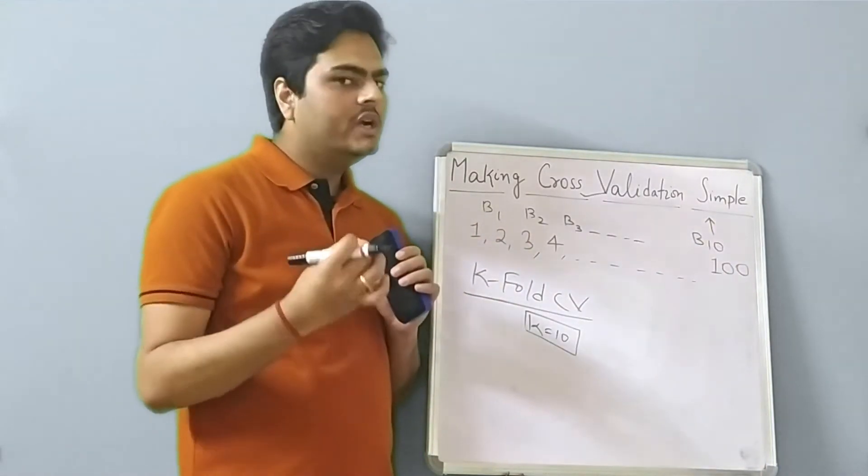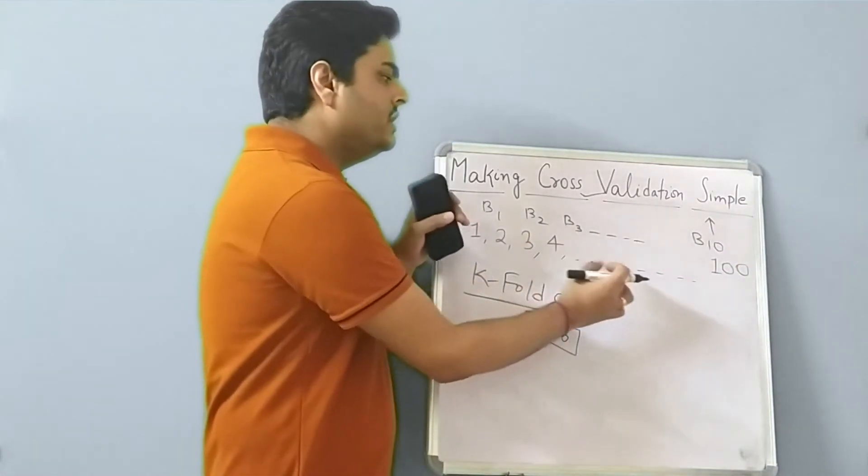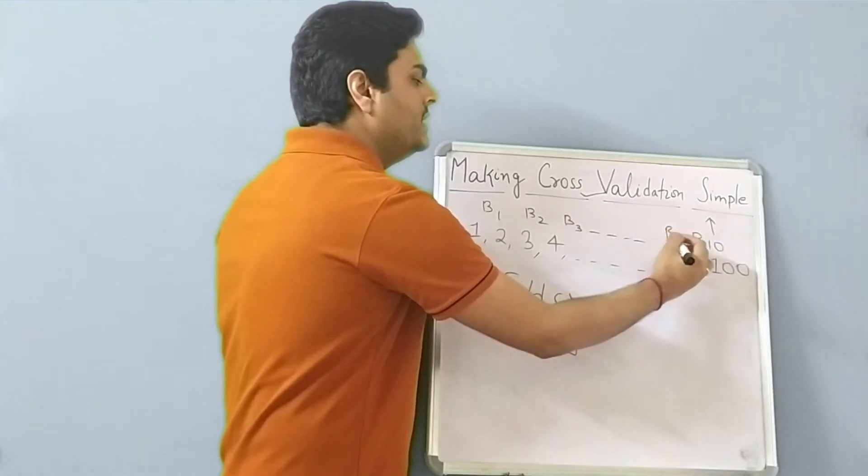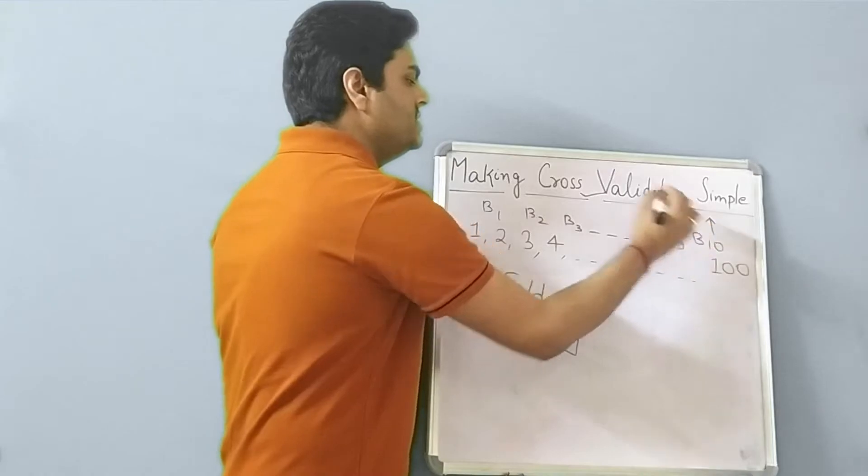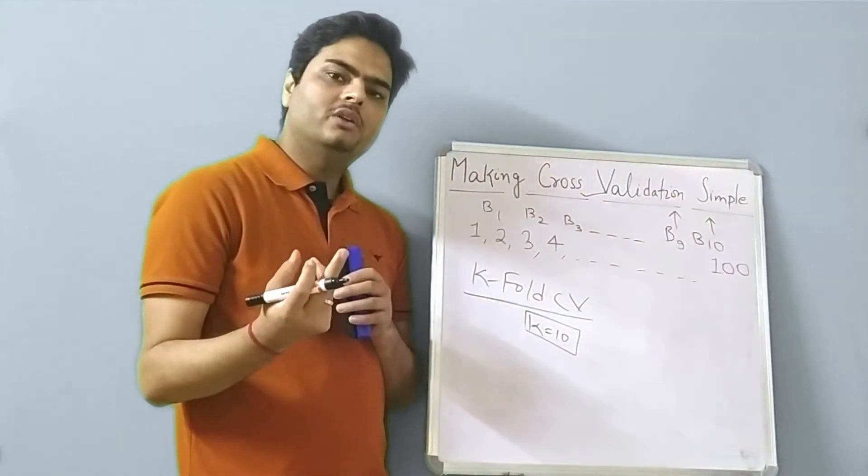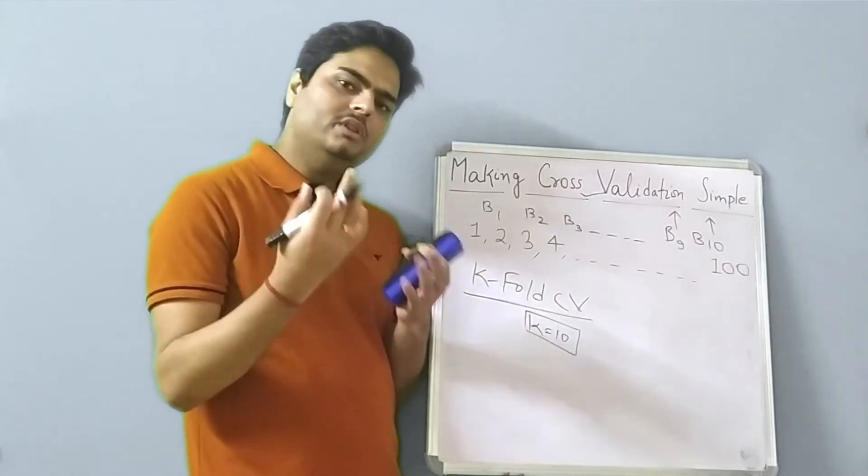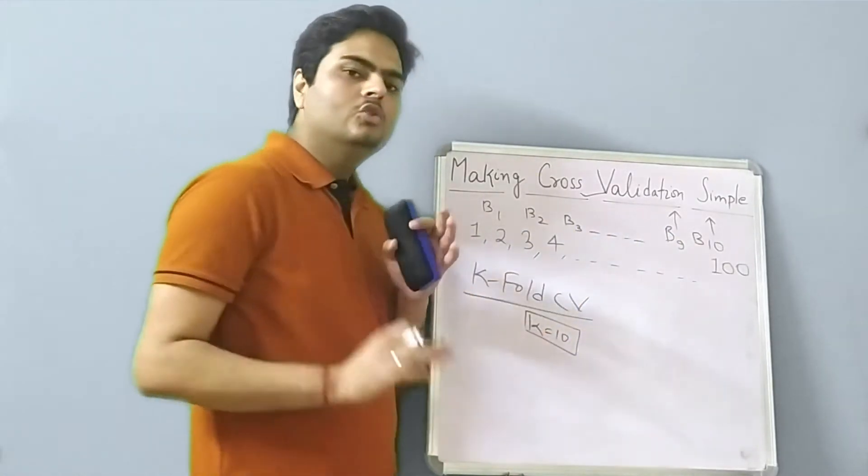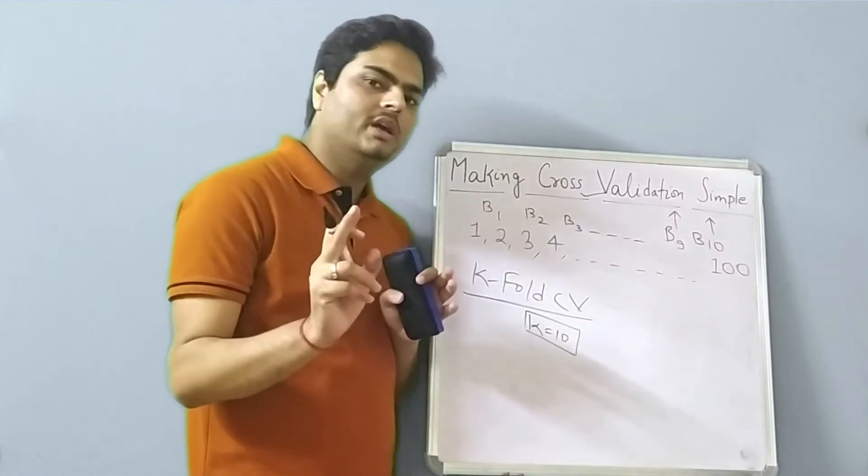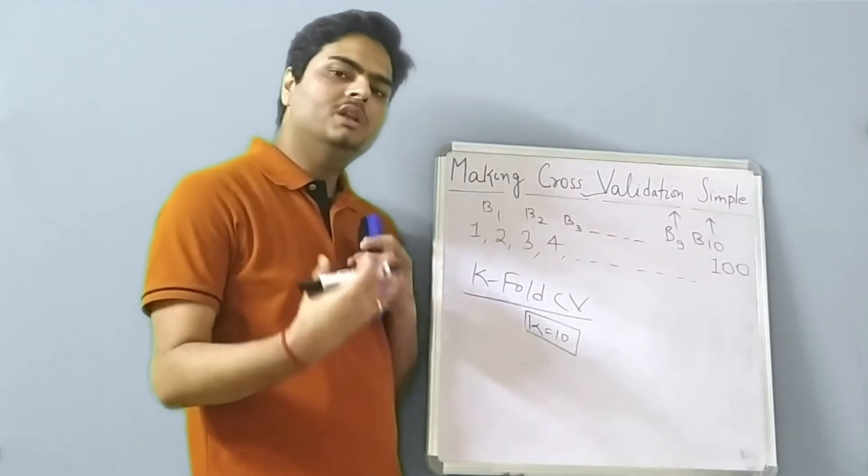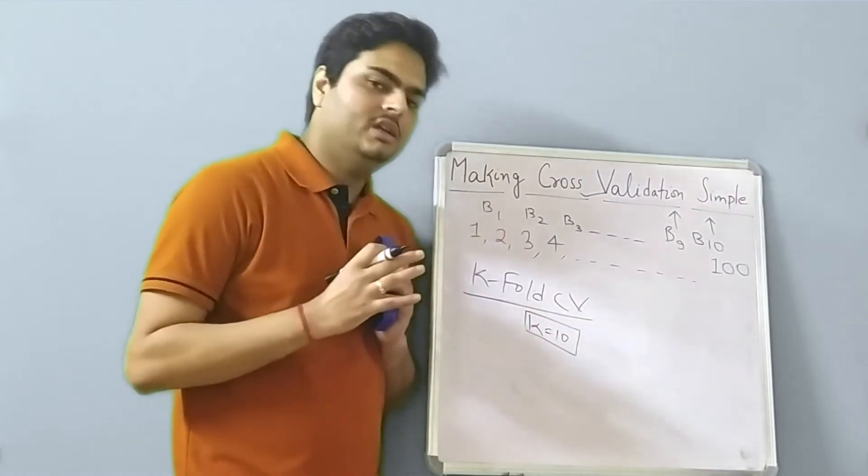In next iteration, your model will get trained on bucket one to bucket eight plus bucket 10 and bucket nine will be kept for testing. Similarly, next iteration, everything apart from bucket eight. In next iteration, everything apart from bucket six. So what is happening here is one bucket is kept out of the training set and model is trained on the rest of the data.